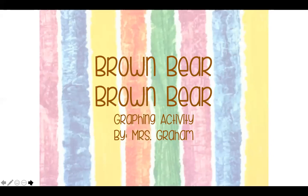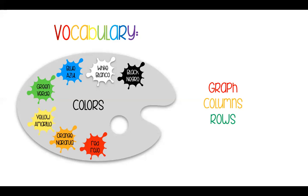This is the Brown Bear, Brown Bear graphing activity by Mrs. Graham. Our vocabulary for this activity is going to be our colors: red, orange, yellow, green, blue, white, black. Some of our vocabulary words are graph — and you're going to see what a graph looks like today — and then we're going to talk about columns and rows.